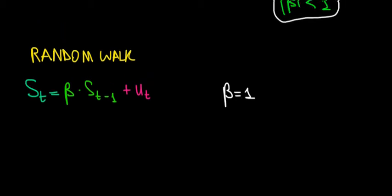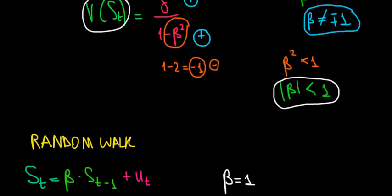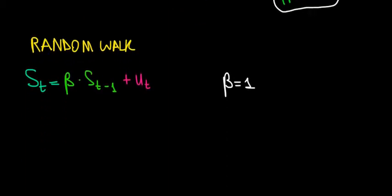Now recall from the previous video we said that to have a stationary AR1 process, we need the criteria that beta must be less than 1 in absolute value. Over here we clearly see that we're violating that assumption because beta equals 1.